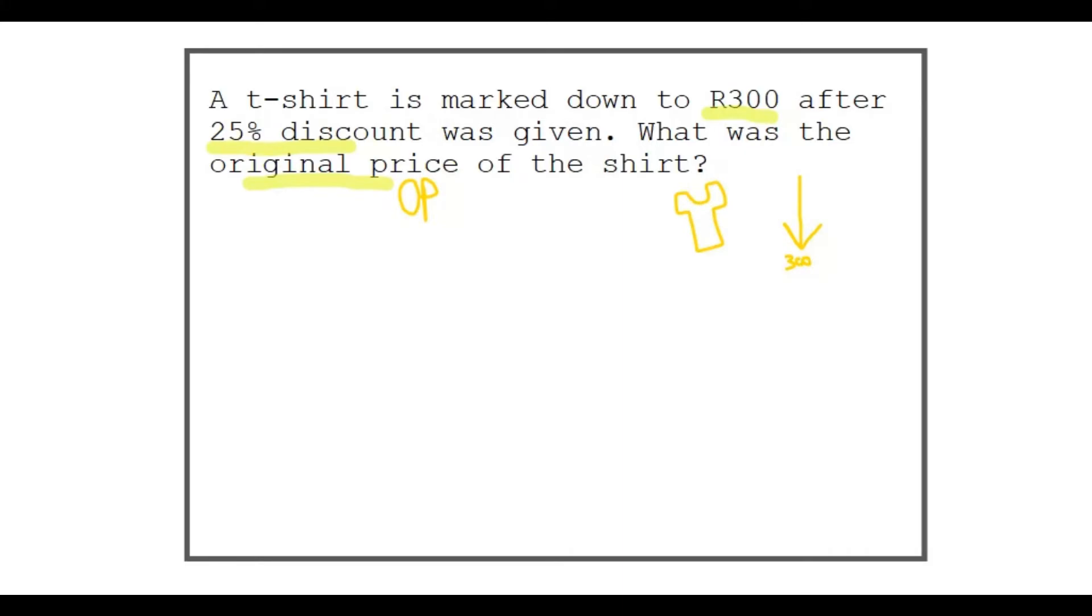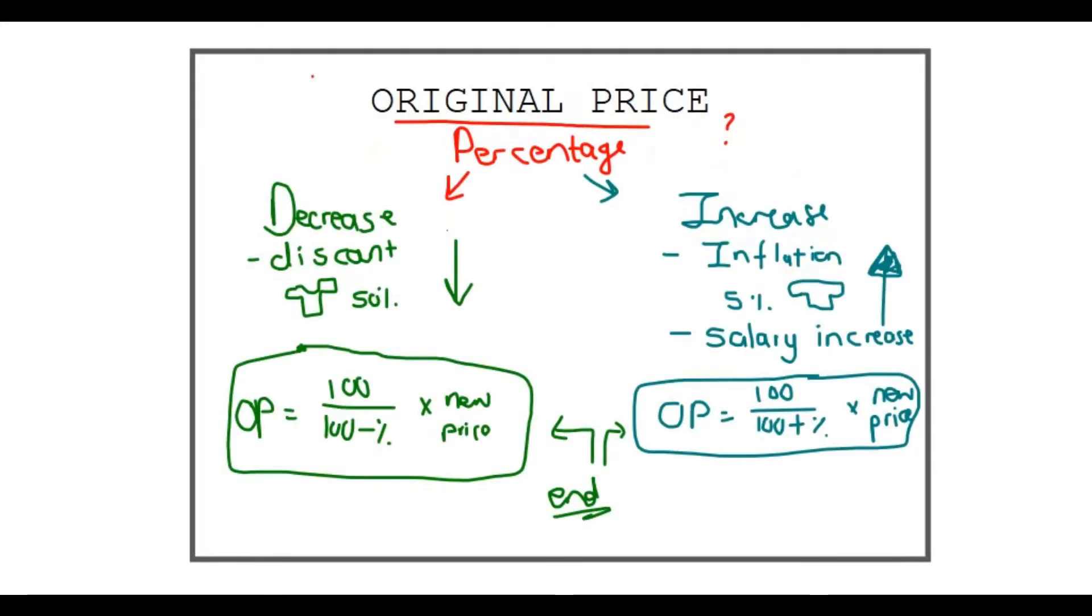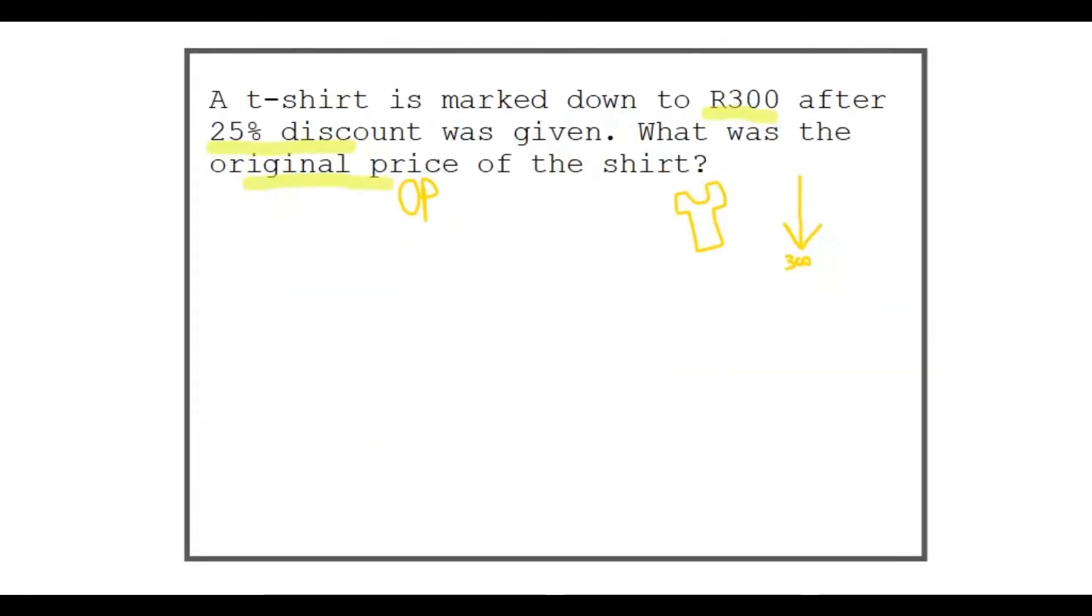There's my t-shirt, it was something and now it's 300 rand. It was marked down by 25%. Let's try and find out which formula we're going to use. It's this one, percentage decrease, because the amount went down, there was some discount applied.